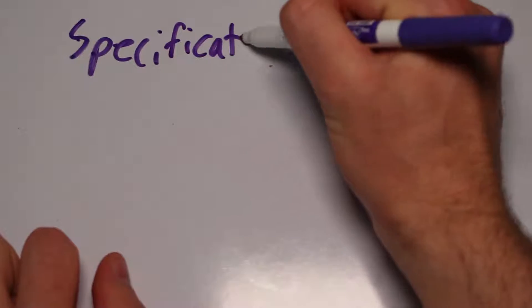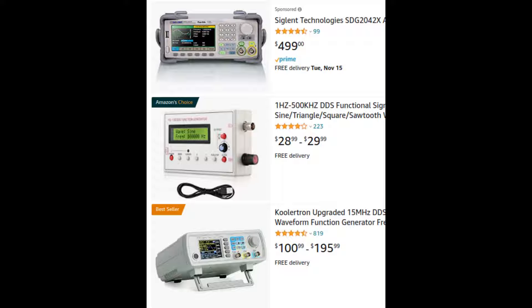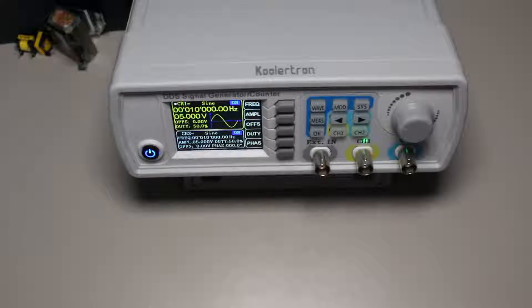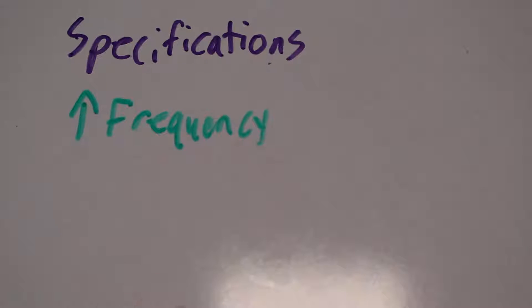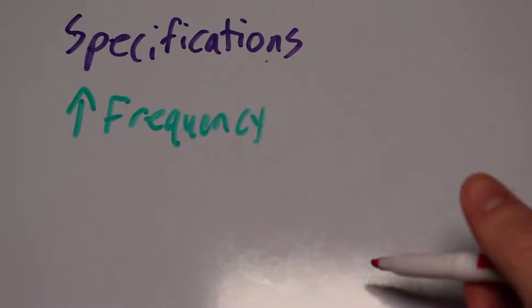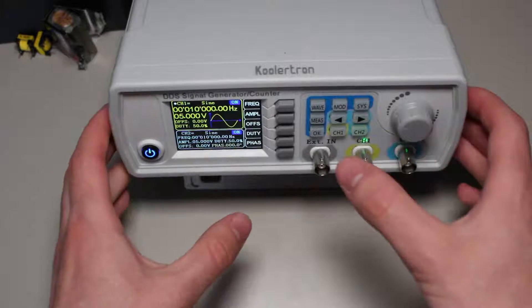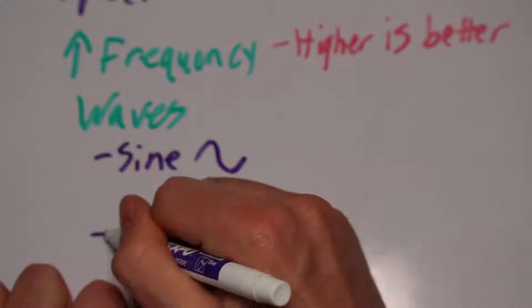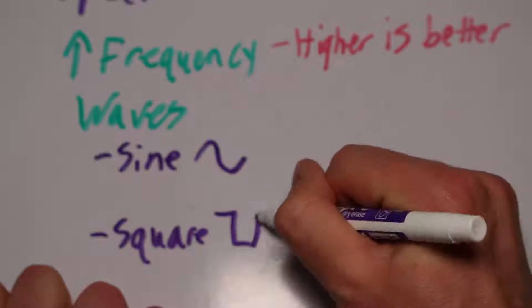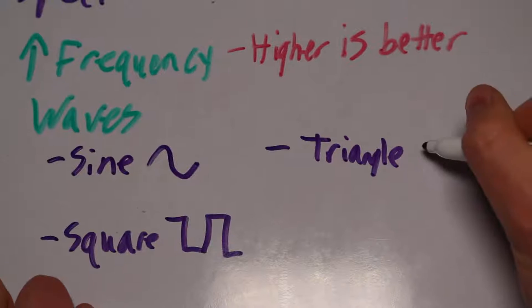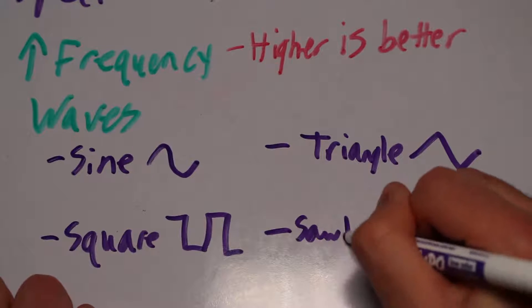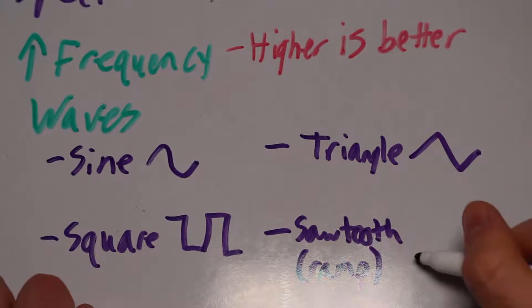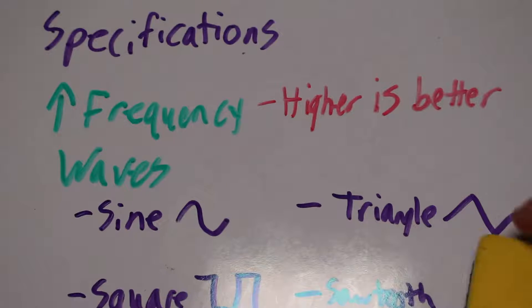Let's begin with the specifications of good function generators. We can get some ideas from the ones you can buy online, and also the one I currently have myself. The numerical value that typically increases the price of these generators is the maximum frequency — my function generator runs at a maximum speed of 60 MHz. The other factor is the variety of functions the device can generate. The bare minimum should include a square wave, hopefully with a variable duty cycle, a sine wave, a triangle wave, and a sawtooth wave, otherwise known as a ramp. There are other waves like reverse sawtooth, but they aren't strictly necessary. Features like frequency scanning are cool but also not strictly necessary.